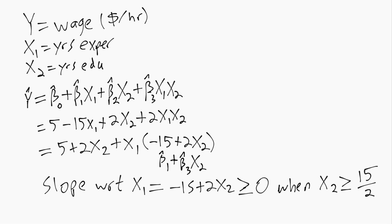Then that would mean everybody has x2 above that threshold, in other words, the slope with respect to x1 would be positive for all individuals in our dataset.